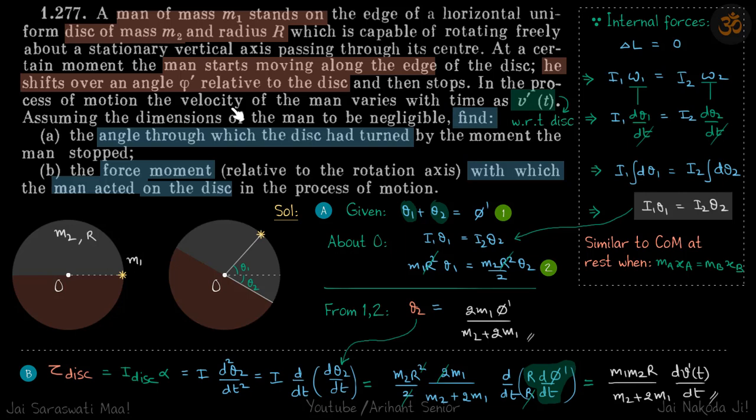In the process, the velocity of the man varies with time as v dash t, which is with respect to the disk. Finally he has stopped, so here his velocity is zero. We need to find the angle through which the disk has turned when he has stopped, and the torque with which the man acted on the disk.